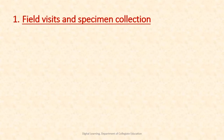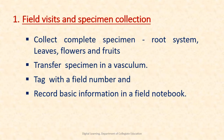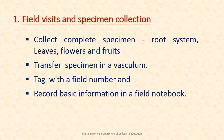Field visits and specimen collection: Collect complete specimens with all parts — roots, root system, leaves, flowers, fruits, etc. Transfer the specimen in a vasculum to prevent wilting. Tag the specimen with the field number and record basic information in the field notebook, such as locality, altitude, habit, floral characters, date and time of collection, name of the collector, common name, scientific name, etc.